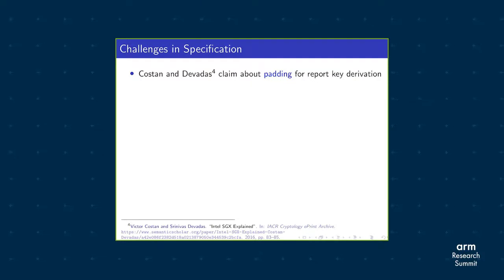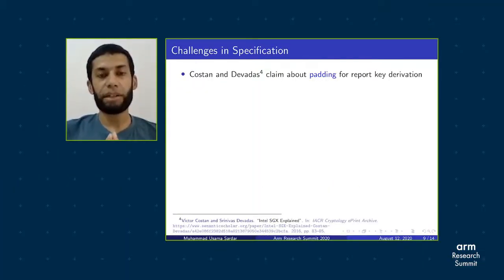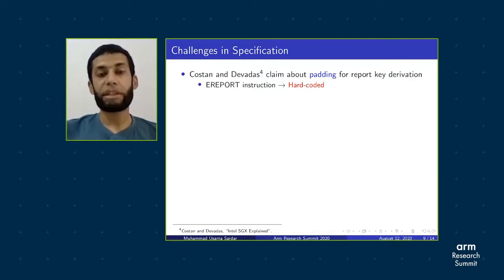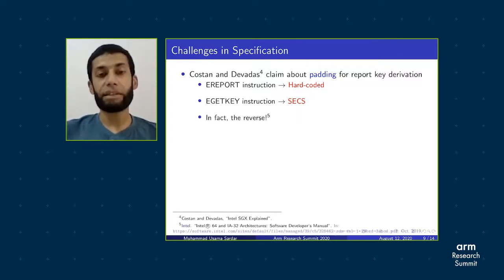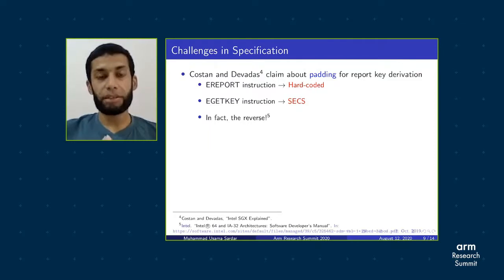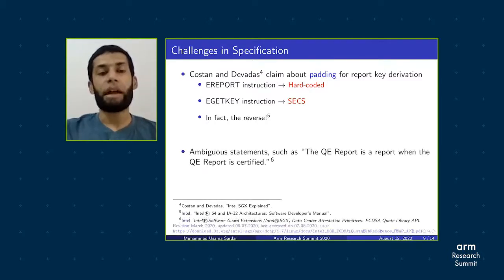One of the biggest challenges in the specification of Intel SGX DCAP is the presence of various discrepancies in the existing literature. For example, the most-cited document on Intel SGX by Costan and Devadas claims that for report key derivation, in the case of the EREPORT instruction the padding is hard-coded, and in the case of the EGETKEY instruction it is from the SGX Enclave Control Structure. However, it is the reverse, as evidenced by Intel's software developer manual. Additionally, Intel's documentation itself contains ambiguities — for example, there are ambiguous statements such as the one shown regarding the quoting enclave report.